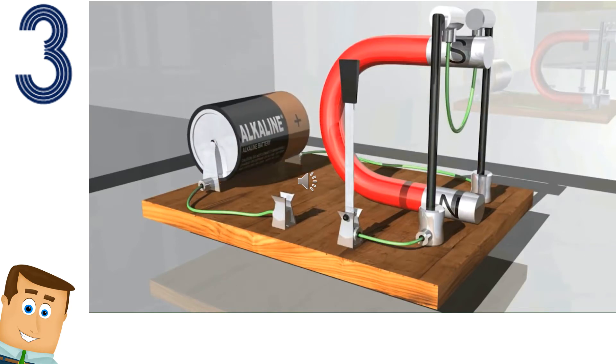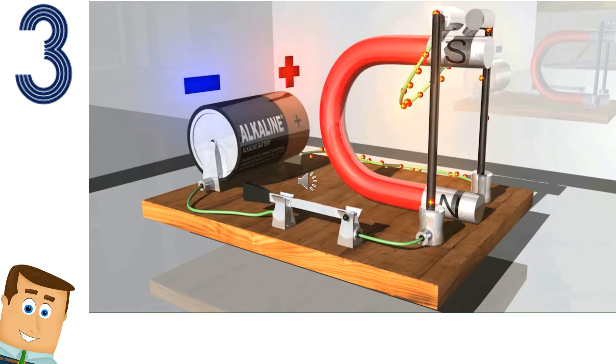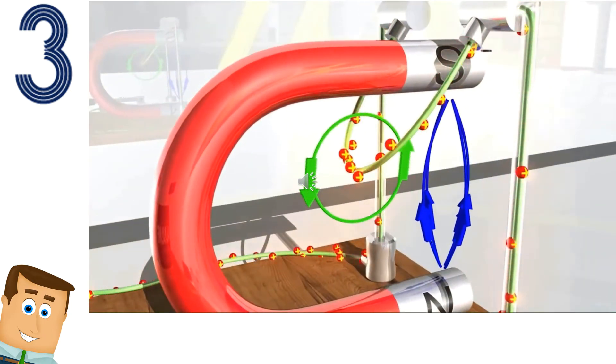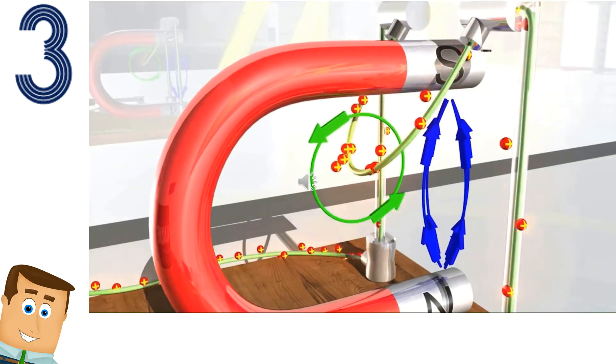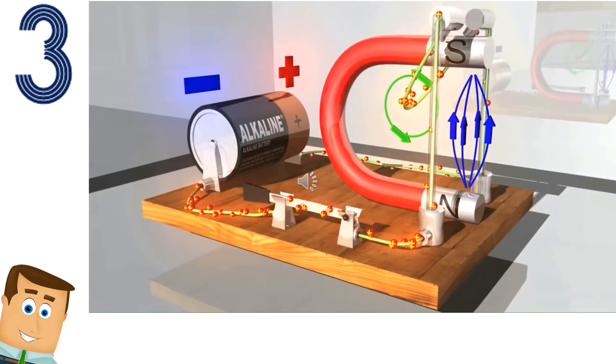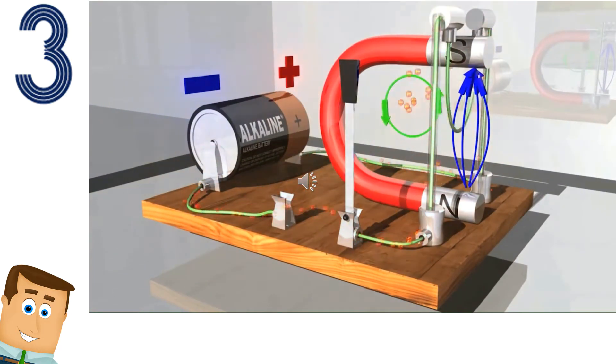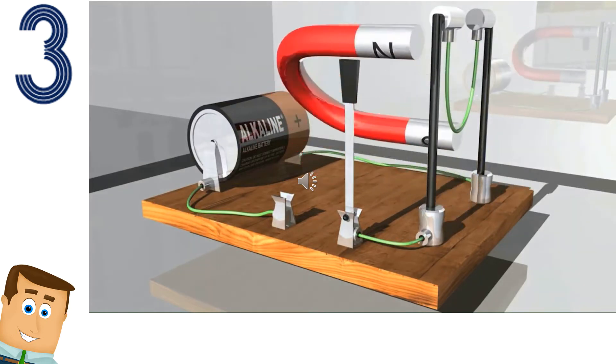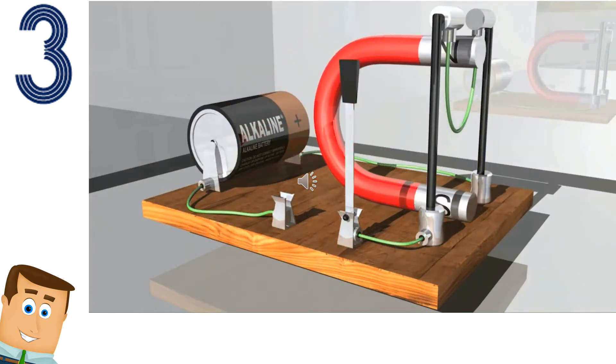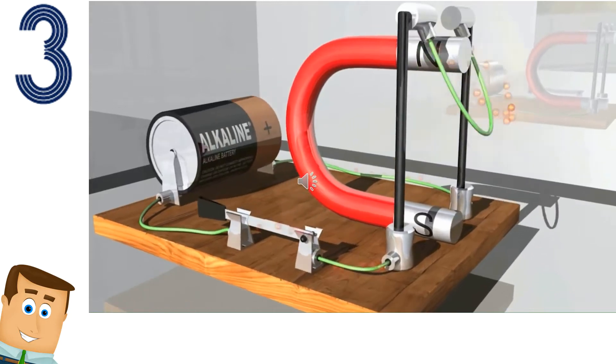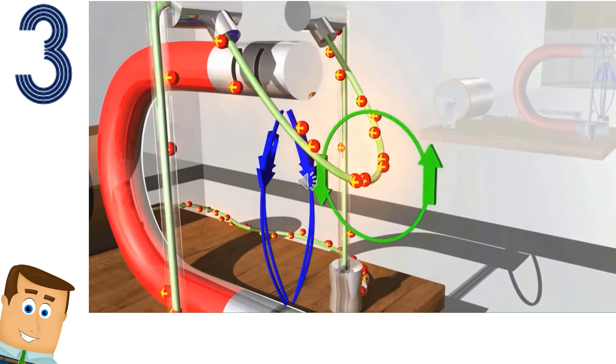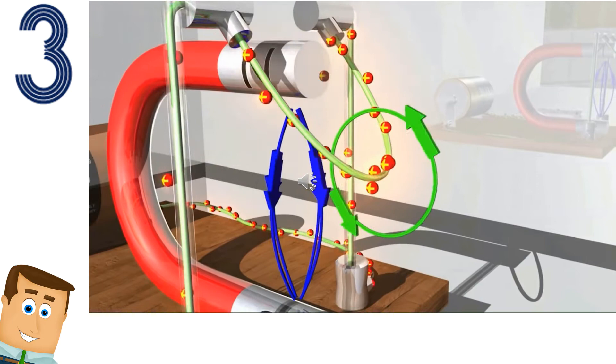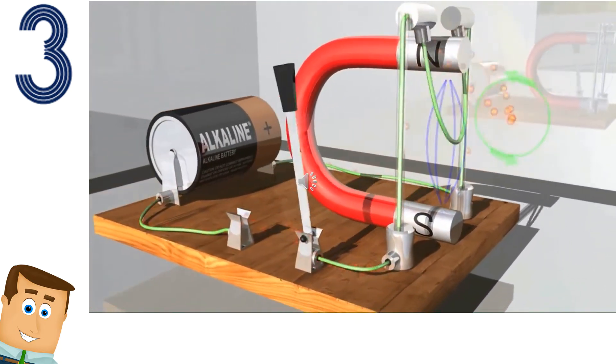Si le damos vuelta a la corriente, también el conductor va a tener un movimiento hacia el otro lado. Si le damos vuelta al campo magnético va a pasar exactamente lo mismo, va a haber movimiento hacia el otro lado.